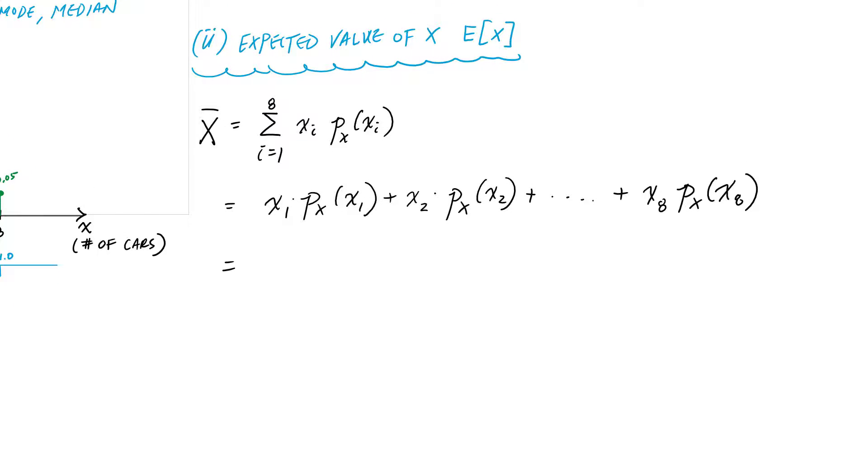All this can be done really quickly on a spreadsheet, but here if I fill in some numbers, this would be the number of cars for X_1 is 1. That's the outcome I expect, and the probability of X equal to X_1 is 0.025.